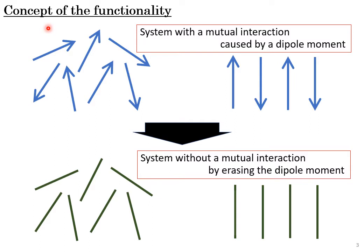This sheet shows a concept of functionality of my presentation. A system that consists of dipole moments has a certain effect of mutual interaction inside the material. It affects the material property such as the deformation, strings, and propagation of vibration caused by the interaction of each moment. If the moment is able to be erased by an artificial procedure, the property of the material is drastically changed and a new functionality will be provided to the material system.